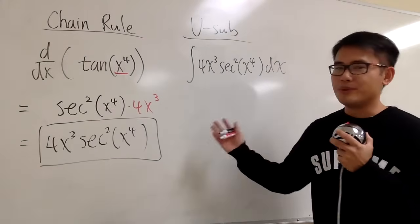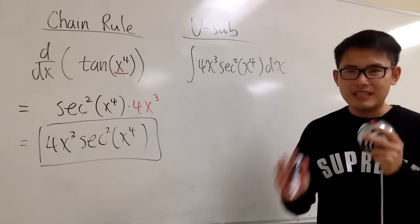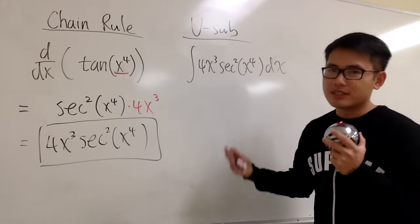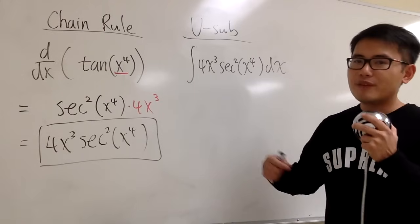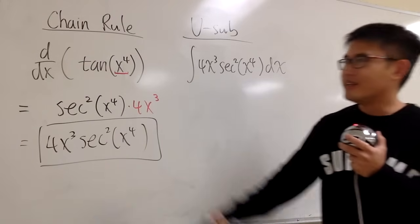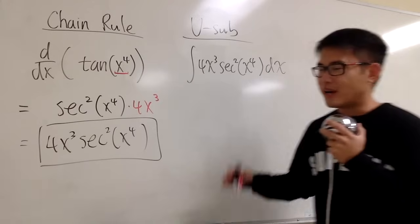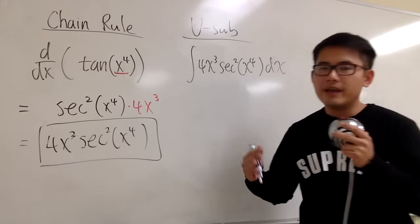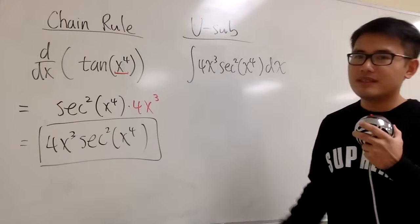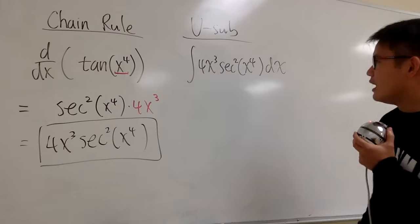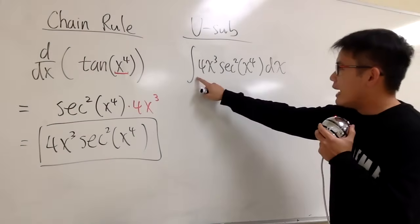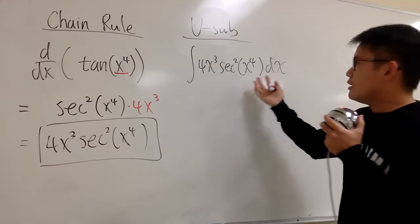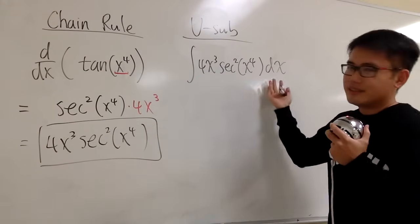I know you guys see what I'm doing here, but I want to show you all the steps. To integrate something, we have to ask ourselves: do we know right away the derivative of what function gives us this? Assume we did not do this question, so I can write down the whole steps and introduce the way that u-sub works. The thought process is: I don't technically know the derivative of what function will give me this right away, because the derivative table doesn't have this as one of the entries.